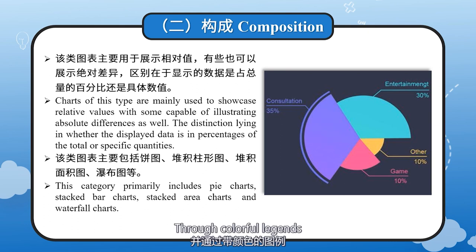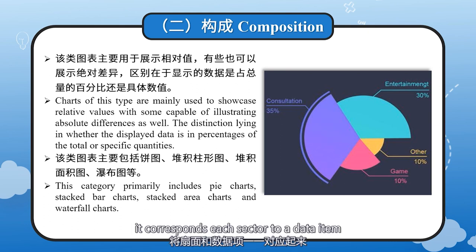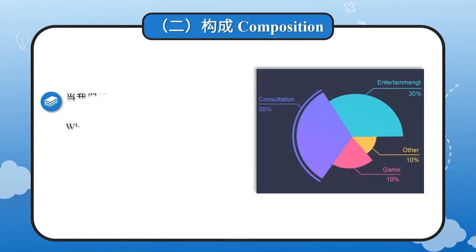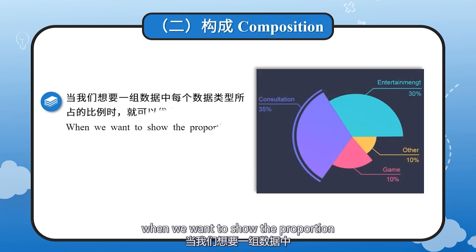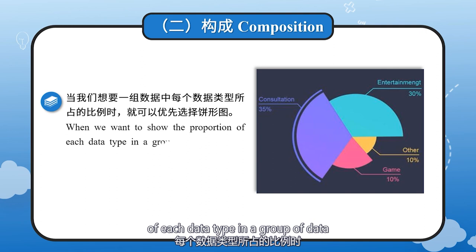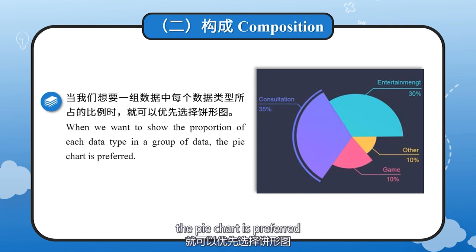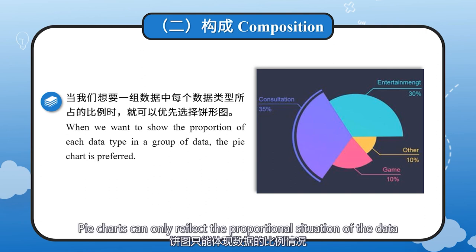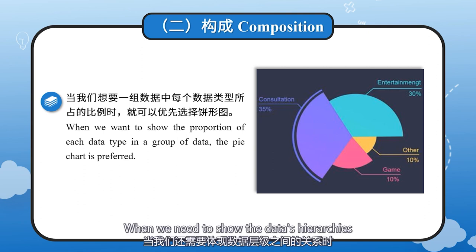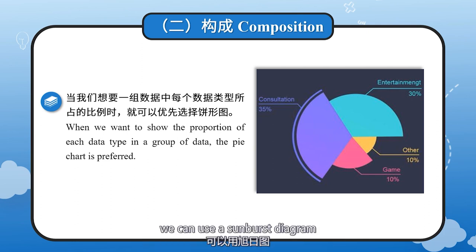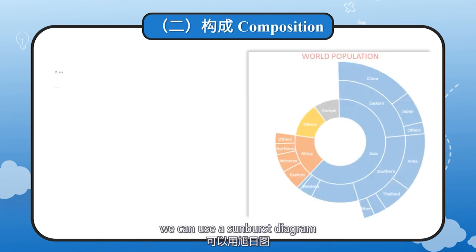Through colorful legends, it corresponds each sector to a data item. Hence, when we want to show the proportion of each data type in a group of data, the pie chart is preferred. Pie charts can only reflect the proportional situation of the data. When we need to show the data's hierarchies, we can use a sunburst diagram.